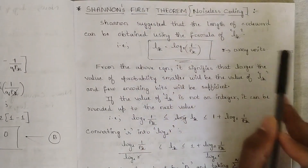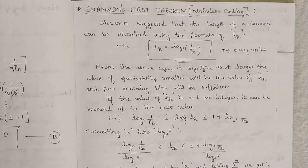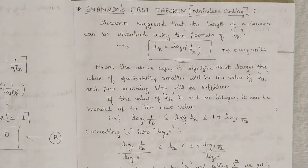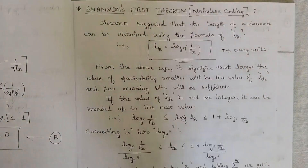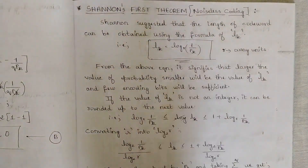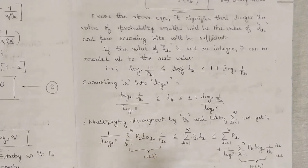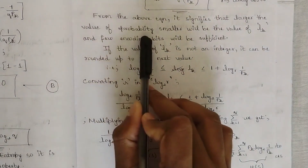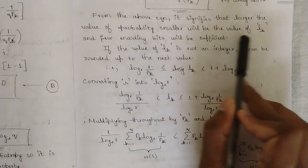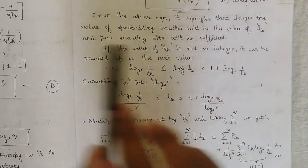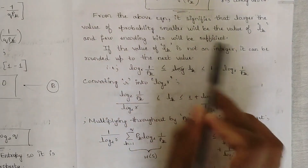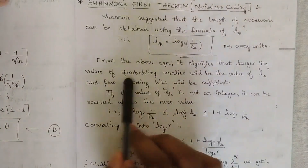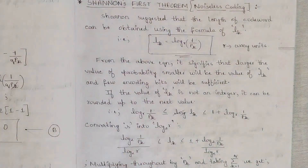R is represented in terms of r-ary units. We are not going to be dealing with base R; we are mainly going to be dealing with base 2. From the above equation, it signifies that larger the value of probability, smaller will be the value of the length of the code word L(K), and fewer encoding bits would be sufficient. That is, larger the probability, smaller the L(K), since they are inversely proportional to each other.